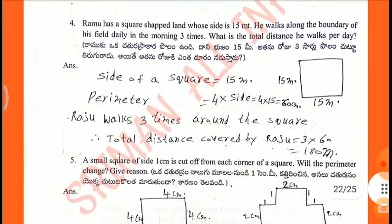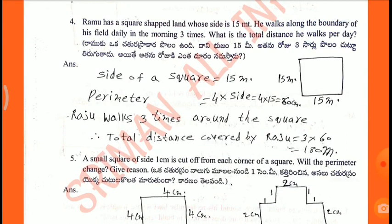Worksheet No. 13, fourth problem. Ramu has a square-shaped land whose side is 15 meters. He walks along the boundary of his field three times every morning. Side equals 15 m, perimeter equals 4 into 15 equals 60 meters. Total distance covered equals 3 into 60 equals 180 meters.